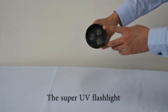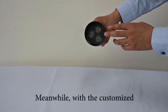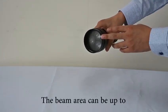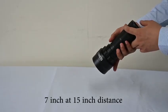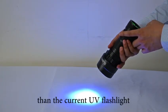The Super UV flashlight is with 3-piece UV LED sensors. Meanwhile, with the customized optical lens modules, the beam area could be up to 7 inches at 15 inch distance, which is much wider than the current UV flashlight.